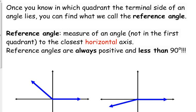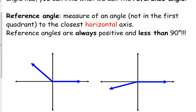A reference angle's actual definition is that it is the measure of an angle that's not in the first quadrant. If the angle is in the first quadrant, its reference angle is the angle itself. We measure them to the closest horizontal axis — that's where people make their biggest mistake, forgetting it's to the closest horizontal axis, not the vertical one. Reference angles are always positive and always less than 90 degrees, between zero and 90 degrees or between zero and pi over two.